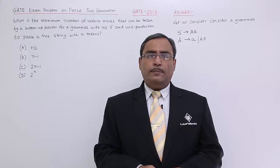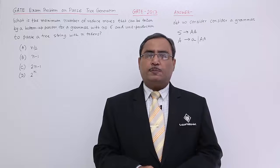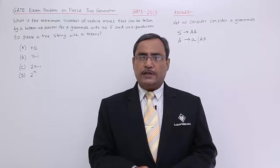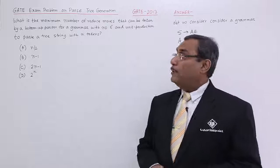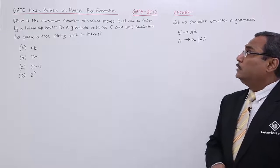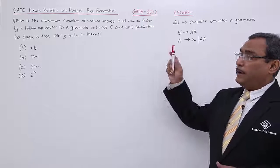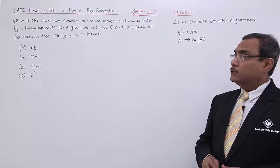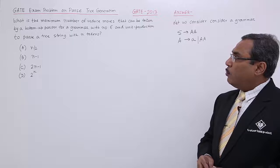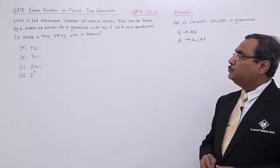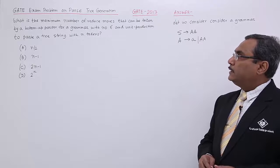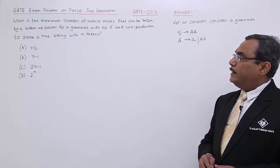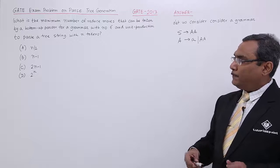Let us solve one problem on sparse tree generation. This problem came in the GATE exam 2013. The question is: what is the maximum number of reduced moves that can be taken by a bottom-up parser?